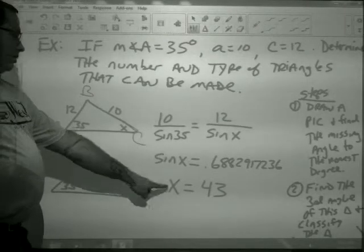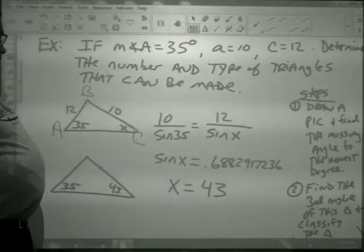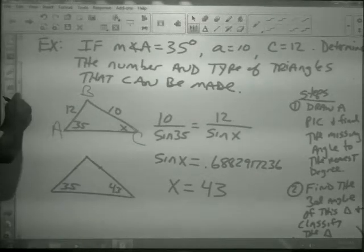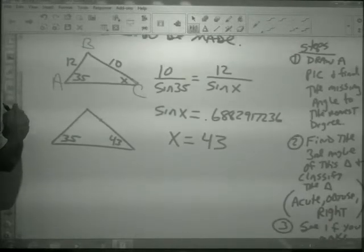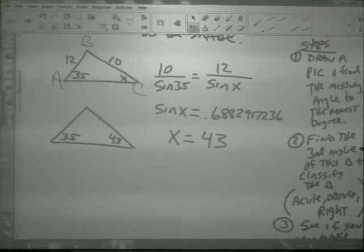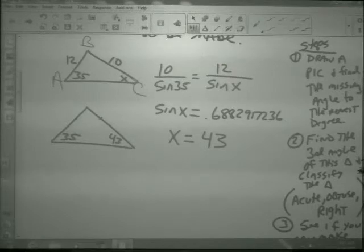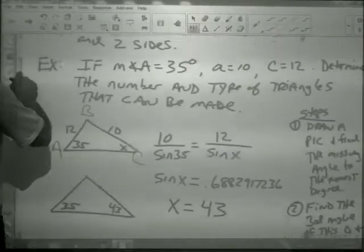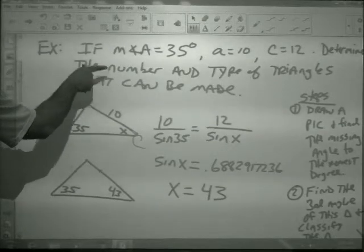Sine X is a decimal. Second sine, I get 43 degrees. So, here's my triangle. Comes out to be 43 degrees. Find the third angle of this triangle and classify it. Because the question was, how many and the type.